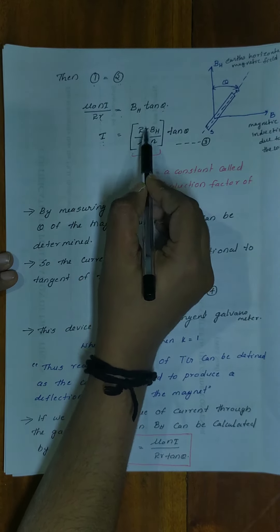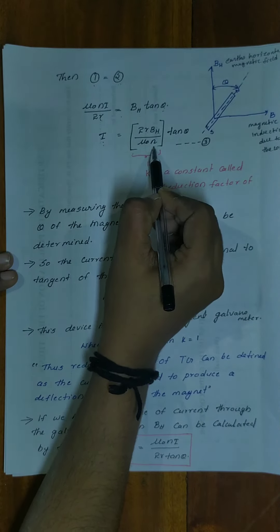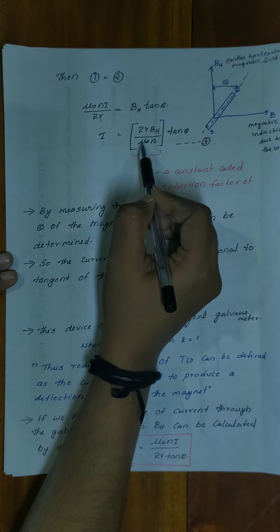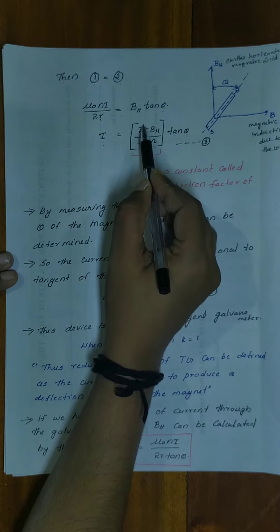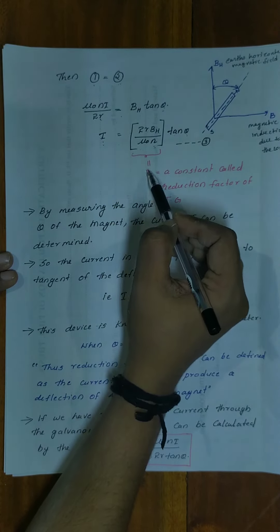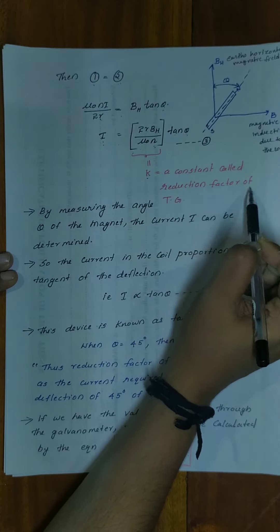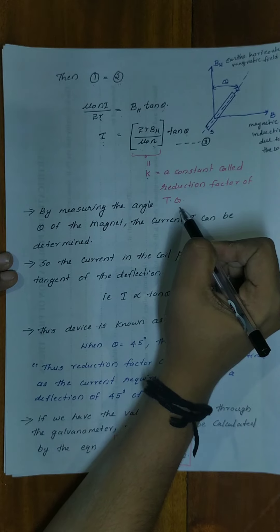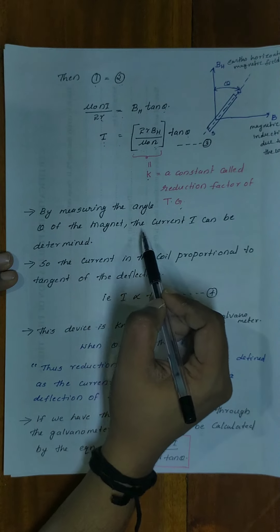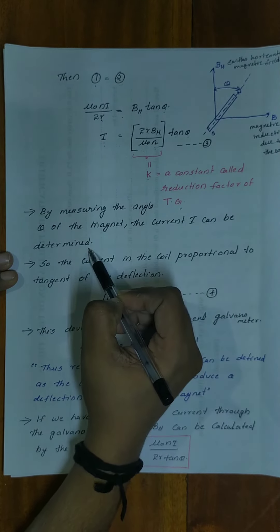Rearranging, I is equal to 2R·BH by mu₀N into tan theta. By measuring the angle theta of the magnet, the current I can be determined. We measure this angle theta using the aluminum pointer which indicates the deflection.